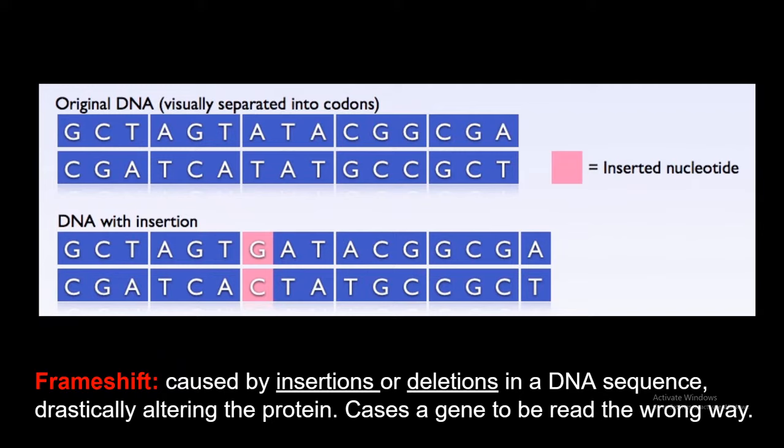So, firstly, we're going to talk about the frameshift mutation. This is caused by either an insertion or a deletion in a DNA sequence that drastically alters the protein. This causes the gene to be read the wrong way. As we know that a DNA sequence is read in three nucleotides, and every three nucleotides codes for an amino acid.